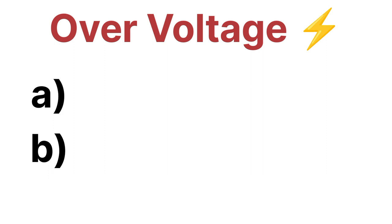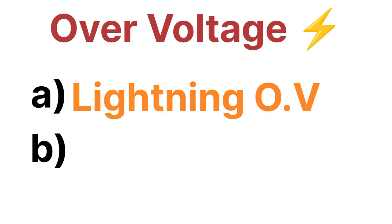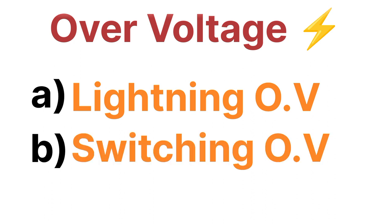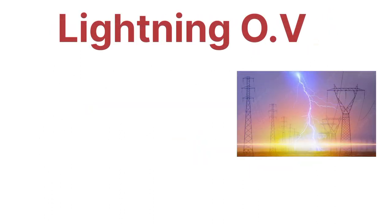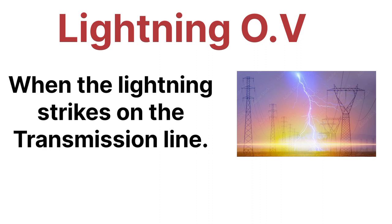The first one is lightning over voltage and the second one is switching over voltage. Lightning over voltage occurs due to lightning — whenever the lightning strikes on the line or the transmission line, over voltages occur due to that. That's why we call it lightning over voltage.